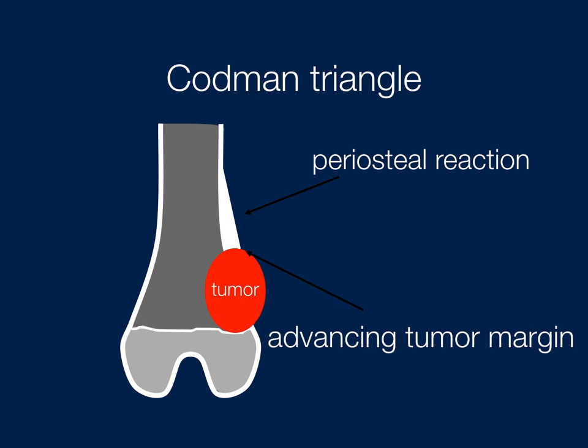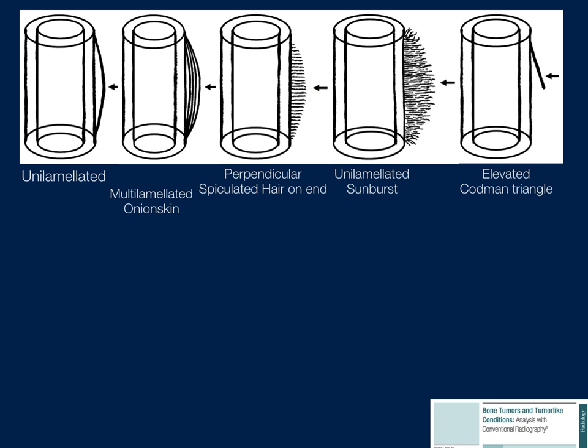The advancing margin causes the periosteal reaction to be elevated — that is a Codman triangle in an aggressive lesion. Think of osteogenic sarcoma. Can you also see it in a benign lesion? Yes — infection sometimes will have this as well.